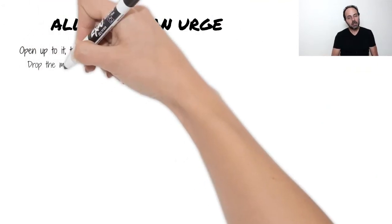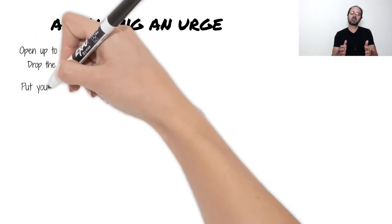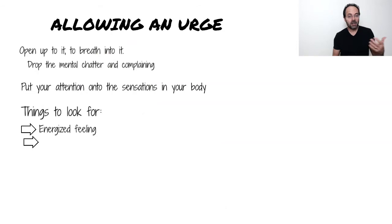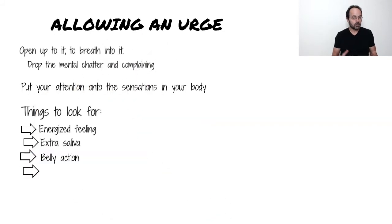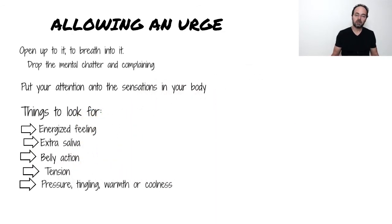When you use this method, it will actually begin to decondition the association between the cues and the reward. And when you do this enough times, the urge is diminished and they lose their power to control your behavior. When I say allow the urge, what I mean is to open up to it, to breathe into it. You've got to drop your resistance, drop your complaining, drop your judgment. The way to do that is to put your attention onto the sensations in your body. Things to look out for might include a heightened energy level, extra spit in your mouth, or some activity in your belly. The urge may create some tension in your neck or back, and you might feel other sensations of pressure or tingling, warmth or coolness.